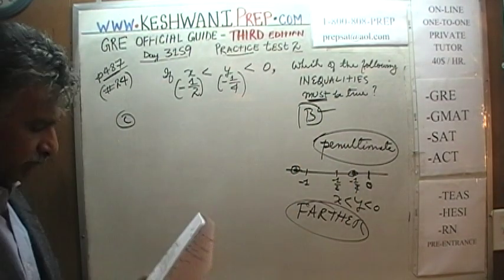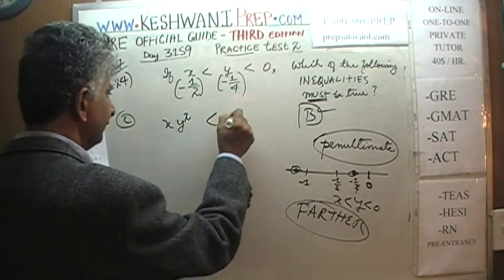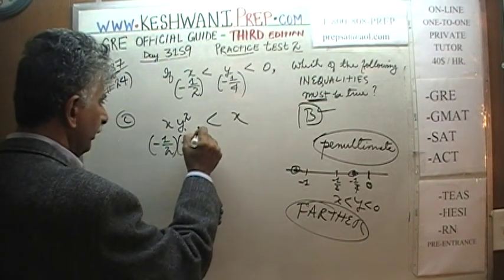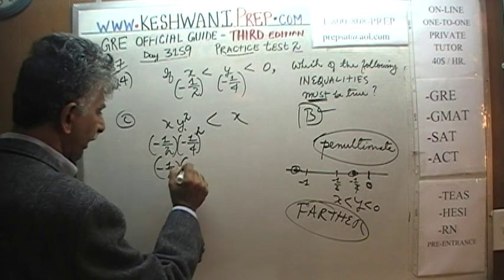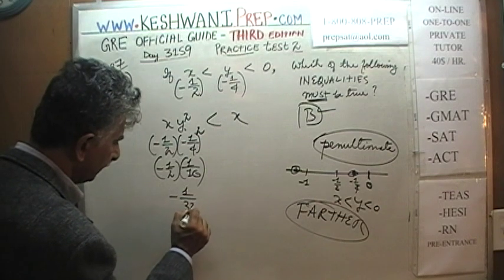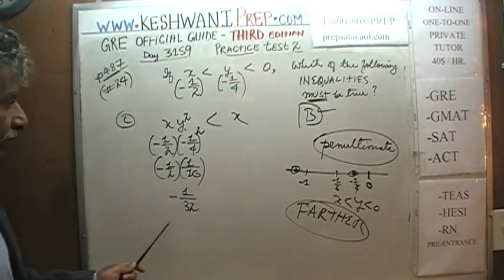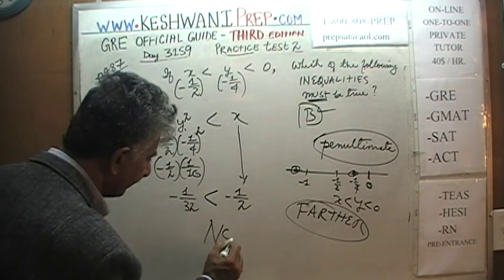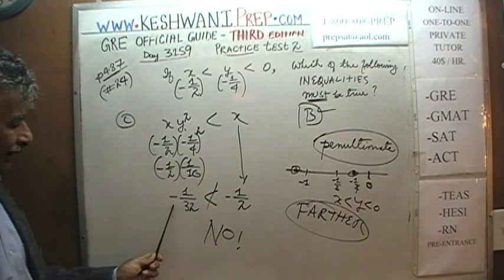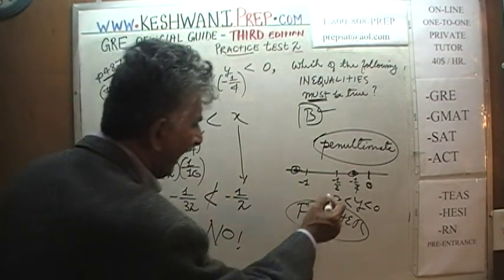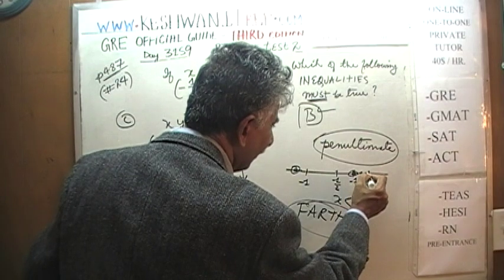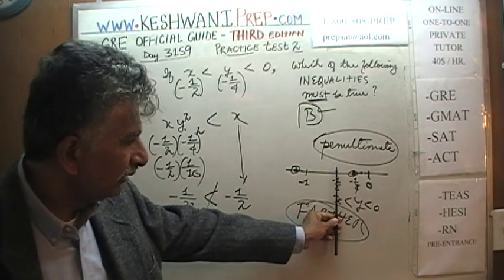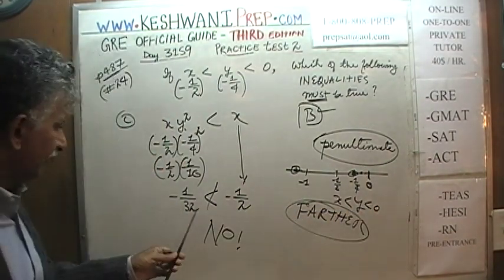C says xy² < x. With x = -1/2 and y = -1/4: y² = 1/16, so x times y² equals -1/2 times 1/16 = -1/32. Is -1/32 less than x = -1/2? No — negative one-thirty-second is very close to zero, much greater than negative one-half. C is not the answer.